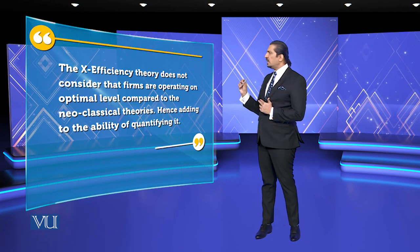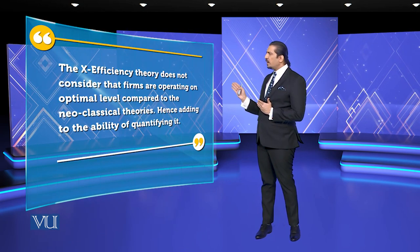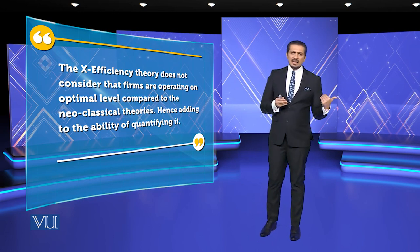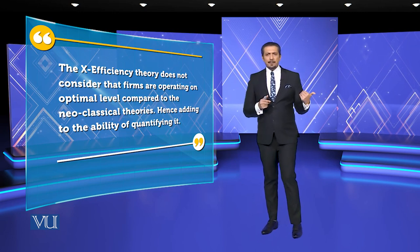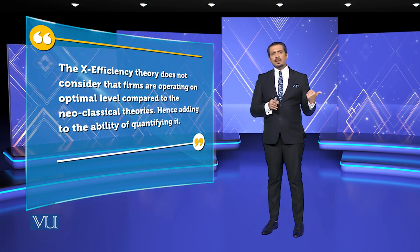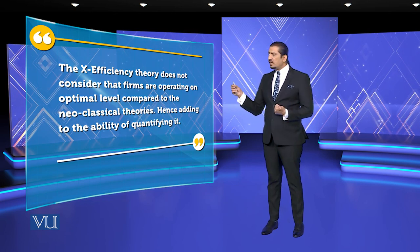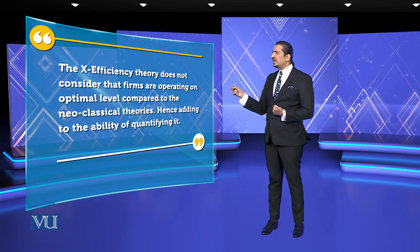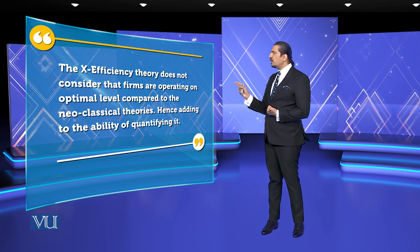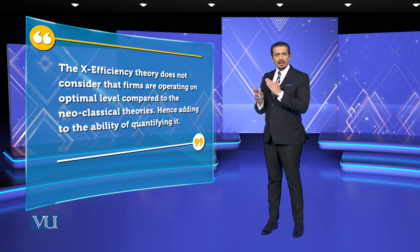An X-efficiency theory does not consider the firm as operating at the optimal level. As I mentioned last time, after practice, when we go into the analysis phase, we have to balance both. But these four factors cannot be subtracted, within which we compare optimal level to neoclassical theories.